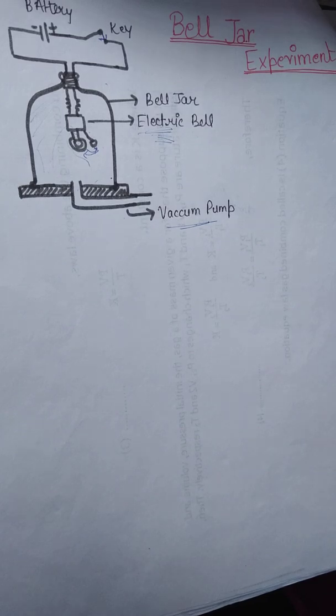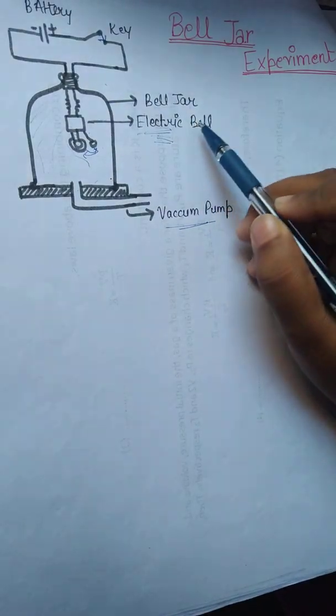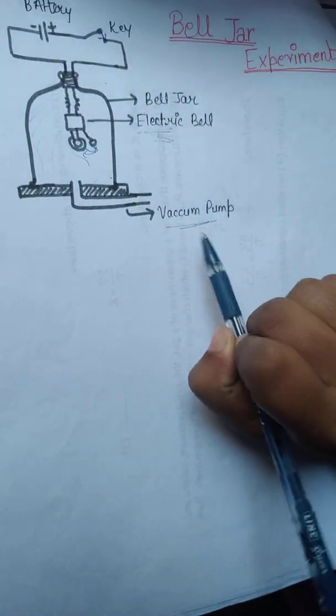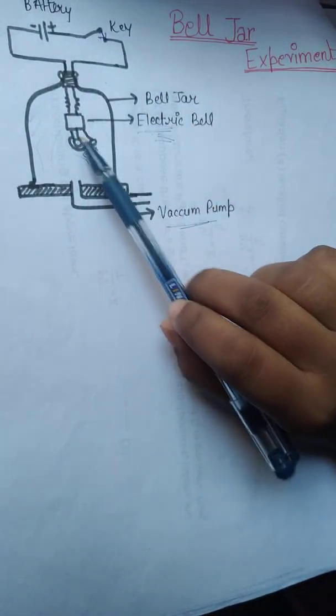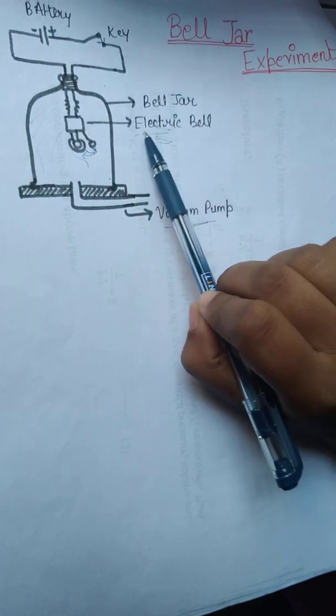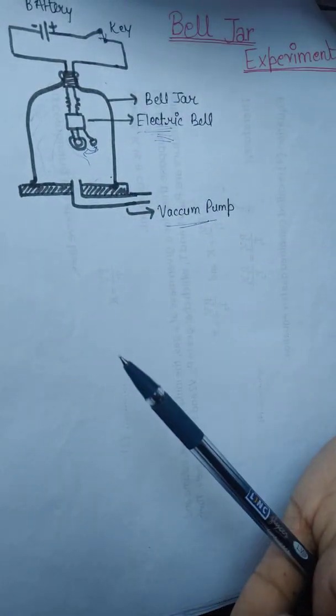Now let's start. In this experiment all the stuff that we need to have is a bell jar, electric bell, vacuum pump, and a battery which will be attached to this electric bell.